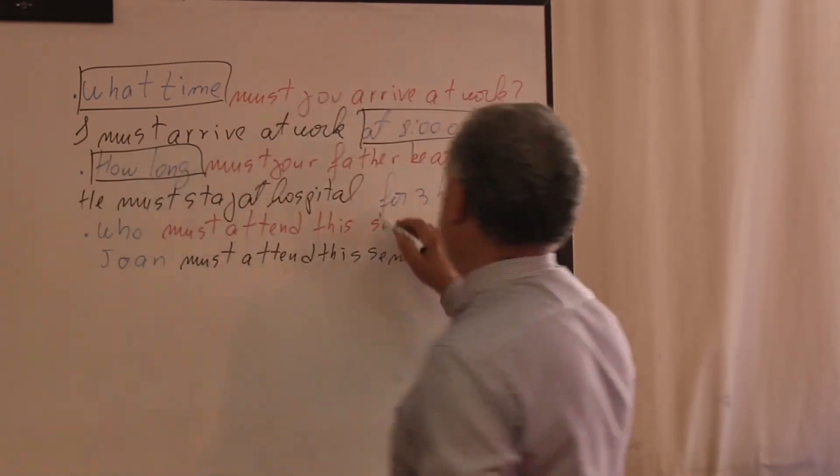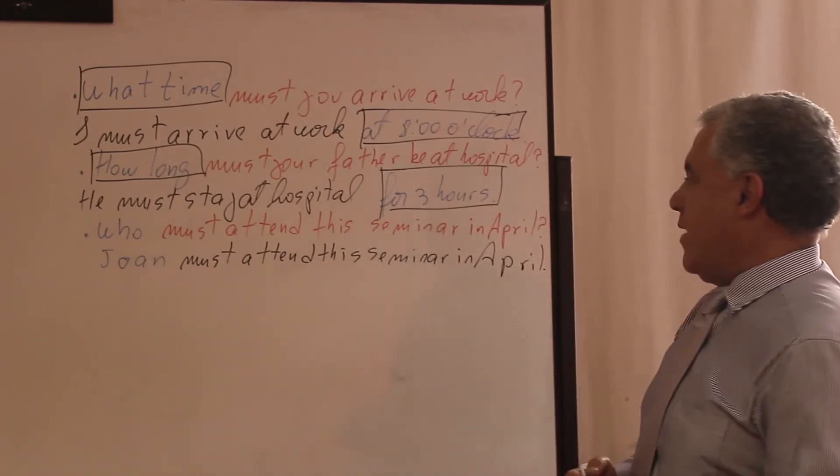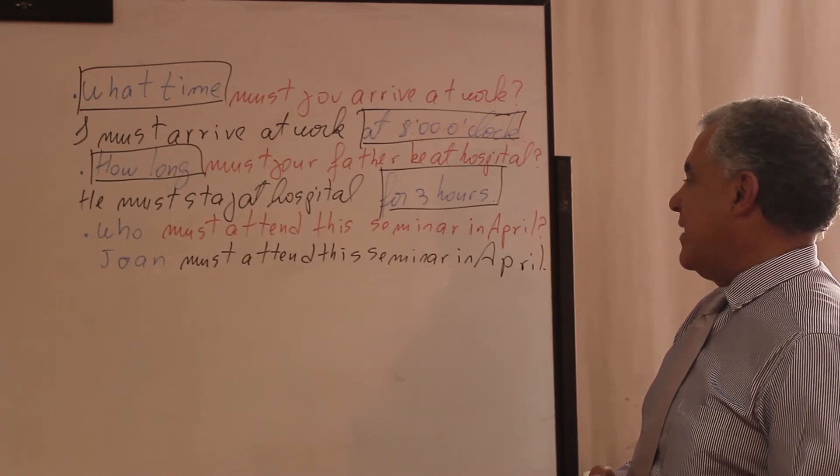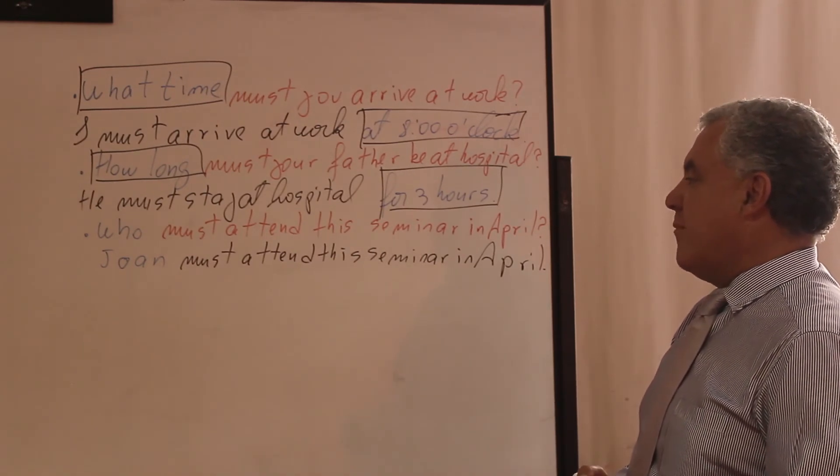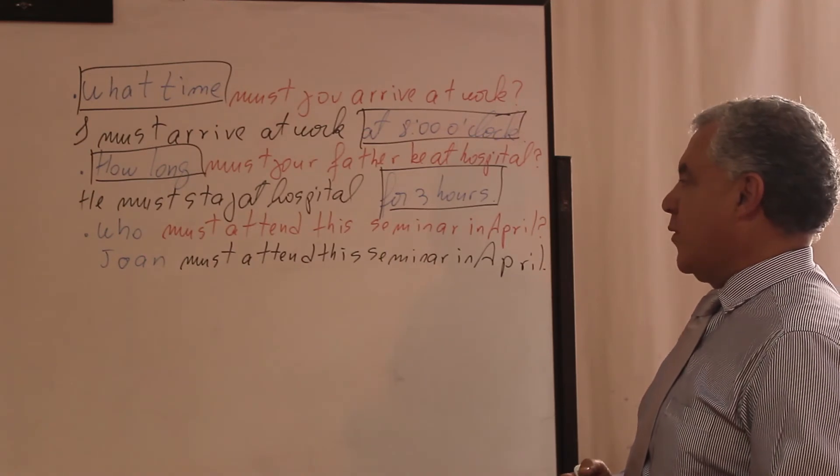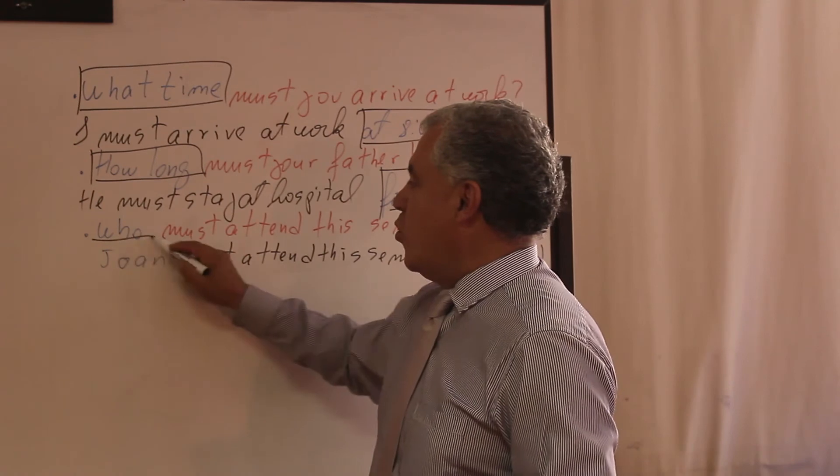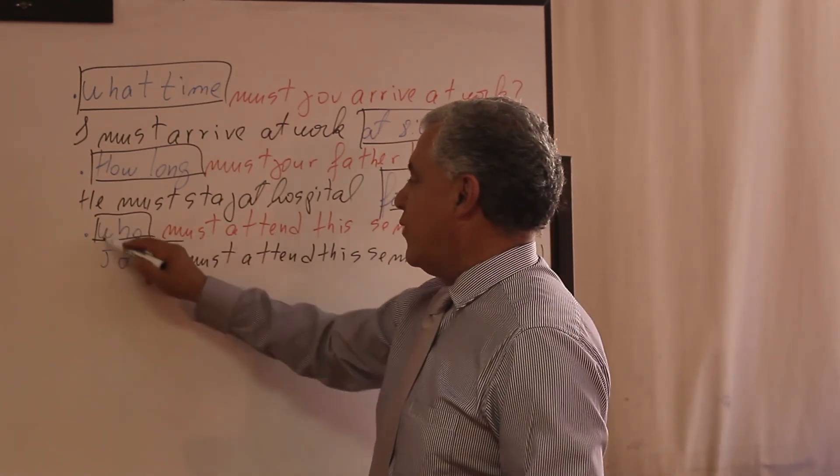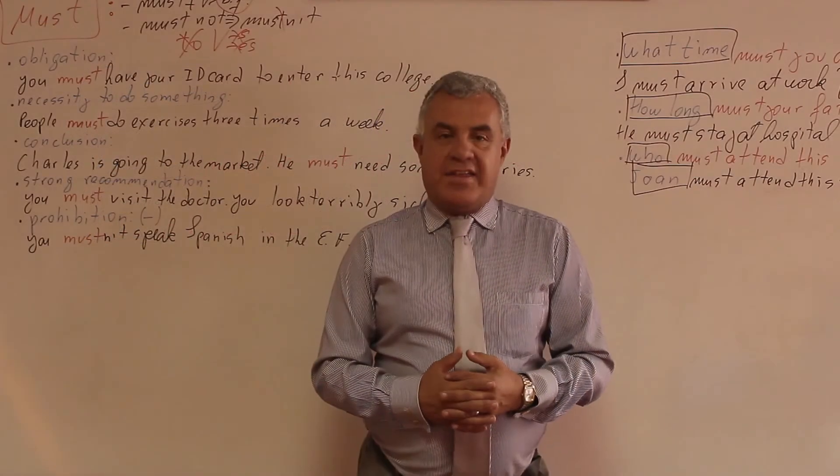The last one, who must attend the seminar in April? The answer is Joan must attend the seminar in April. The question is with who. We use who to ask questions about people. In this case, the answer is, for example, Joan.